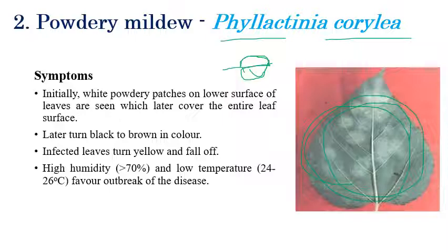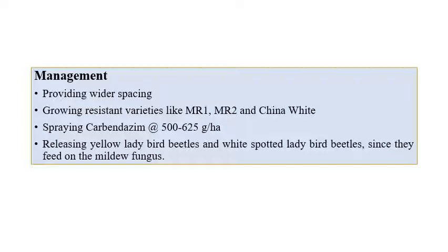Infected leaves are yellow in color and slowly they will start to fall off. High humidity of more than 70% or low temperature of 24 to 26 degrees centigrade is favorable for this disease. Mulberry powdery mildew, caused by Phylactinia coralea, shows symptoms on both surfaces of the leaf. Appearing of powdery mildew on both surfaces is very rare, and especially in powdery mildew of mulberry, powdery growth can be seen on both the upper and lower surfaces.